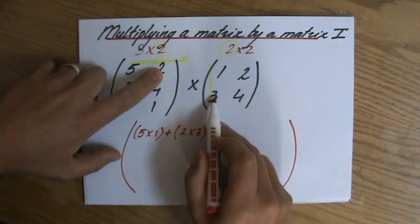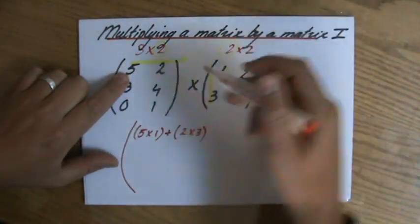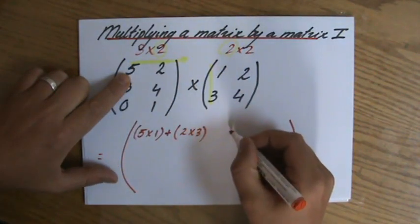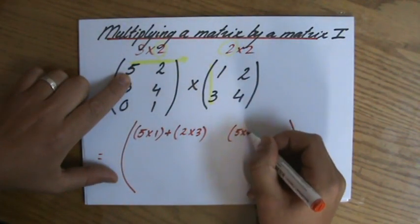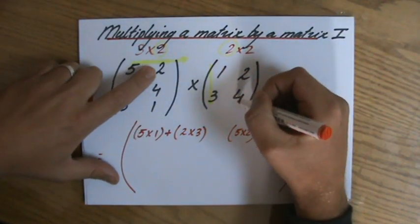But I have another column over there. So again, horizontally in the first one, vertically in the second one: 5×2. That is a new position - 5×2 + 2×4.